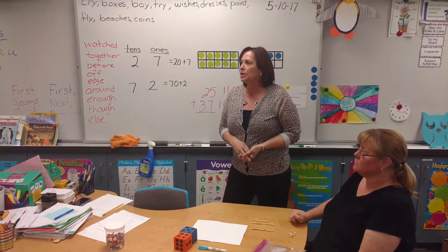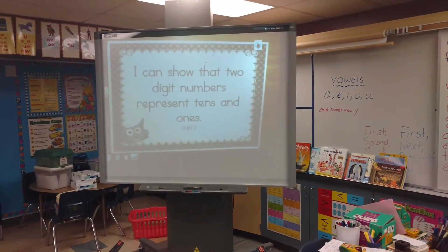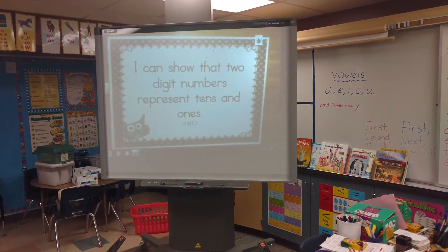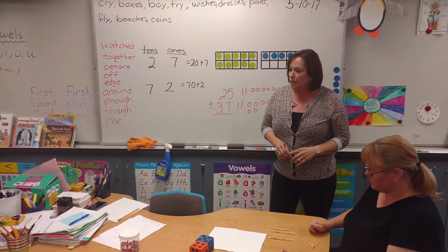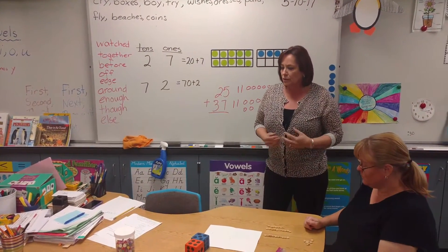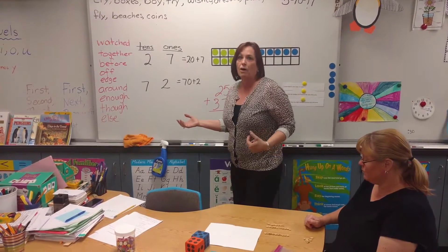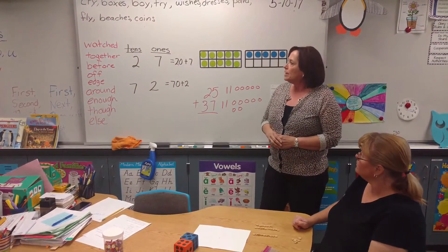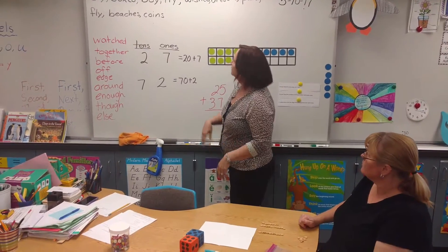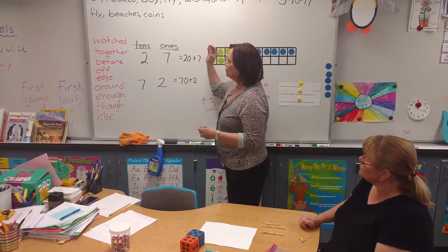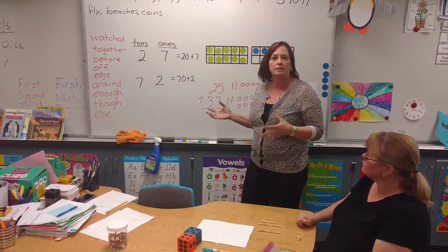We want our students to be able to show that two-digit numbers represent tens and ones. It's important for them to understand place value because they're going to use that when they add and subtract all through school, all through life. So it's important for them to understand that where the digit is positioned is how much that is worth.